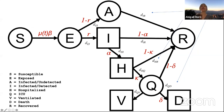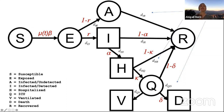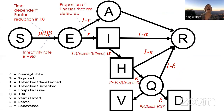Some parameters starting with D are transition times — fixed parameters from the literature. The ones in red are estimated parameters. Key estimated parameters include the infectivity rate, which is directly proportional to R0. They estimate R0 in the model. There's also a time-dependent factor reduction in R0 — the mu function — which allows specification of social distancing scenarios. The ratio parameter R represents the proportion of illnesses that are detected. Additionally there are illness severity probabilities: probability of hospitalization given illness, ICU given hospitalization, and death given ICU.